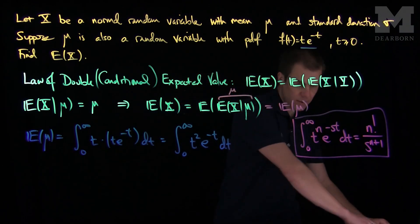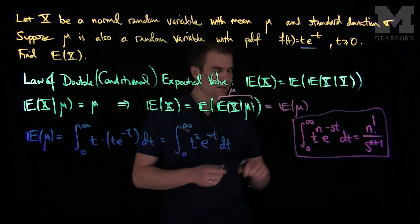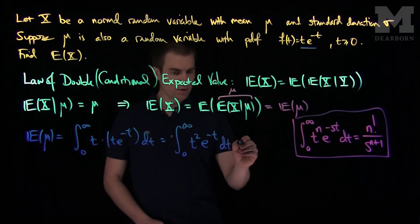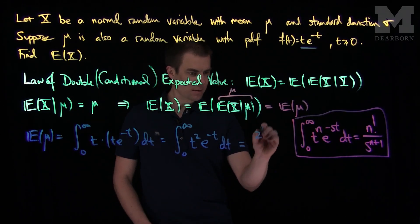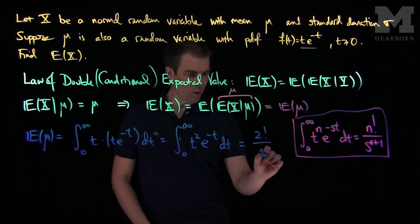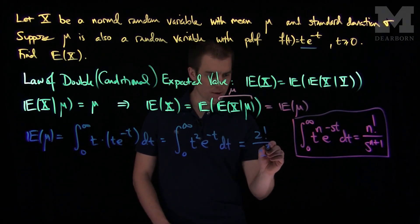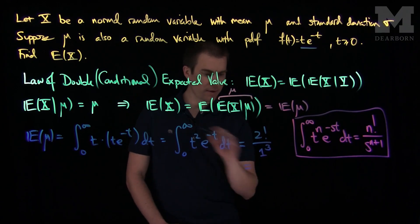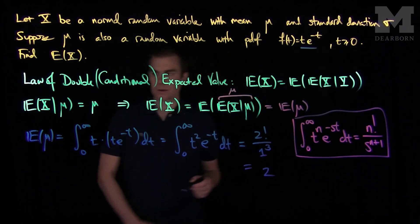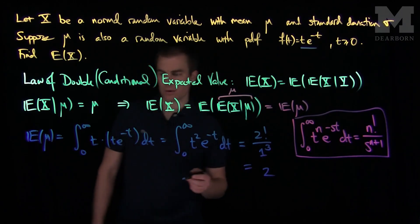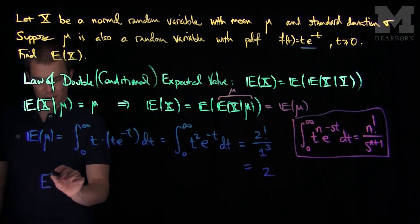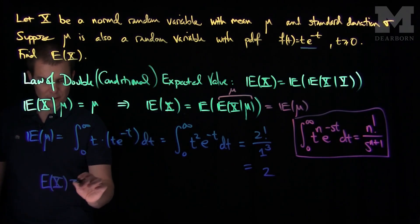And if we do that we will see here that my n is two and my s is one. So I will have two factorial over one, because my s over here is one, s to the third, one to the third power. And so we see that two factorial is just equal to two. So the expected value of μ is equal to two. Therefore the expected value of X is equal to two by the law of conditional expected value.